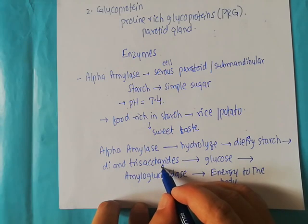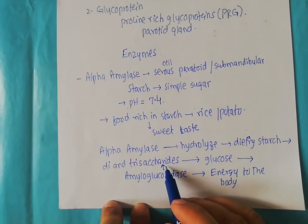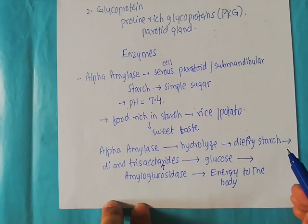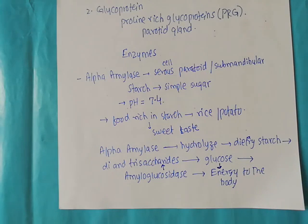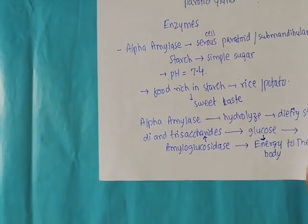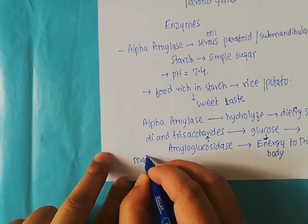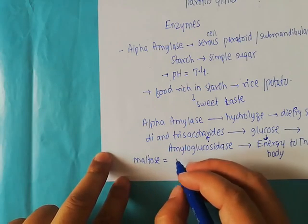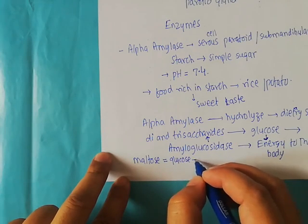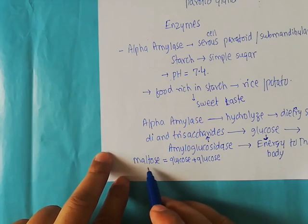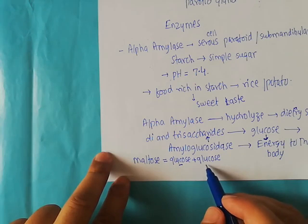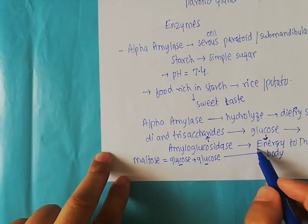So there is another enzyme known as amyloglucosidase. The amyloglucosidase acts on these di- and trisaccharides and converts them into glucose, which is a monosaccharide. This glucose is then used by the body for energy production and performing different physiological functions. For example, maltose is a disaccharide made up of two monomers of glucose. The amyloglucosidase acts on maltose, converting it into glucose in monosaccharide form, which the body can then utilize as a source of energy.